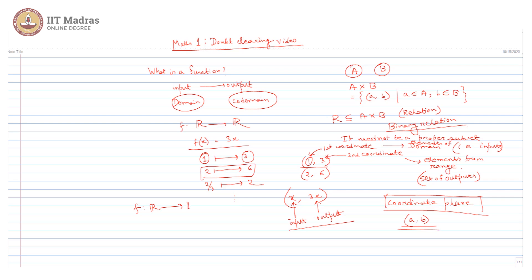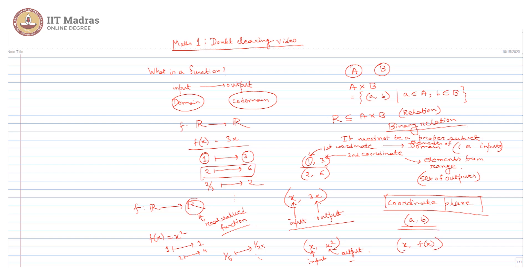Suppose I am taking f from R to R. In this course we are generally concerned about real-valued functions where the output is inside the set of real numbers. Suppose I am taking f(x) = x². Then 1 goes to 1, 2 goes to 4, 1/5 goes to 1/25, and so on. We can write this as the ordered pair x comma x², where x denotes the input and x² denotes the output. In general, a function can be represented as the ordered pair x comma f(x).